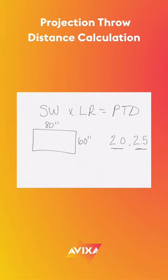Let's go ahead and do these equations. For the first example, we're going to work out 80 inches wide times 2.0, which gives us 160 inches, so that means I can place the projector 160 inches away from the screen.